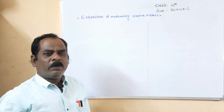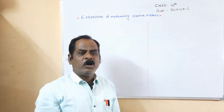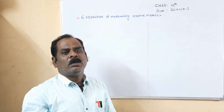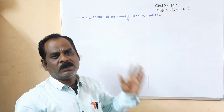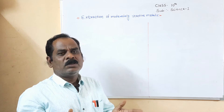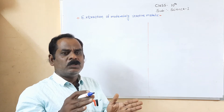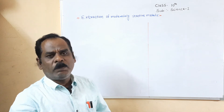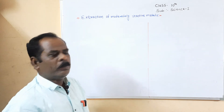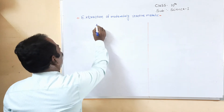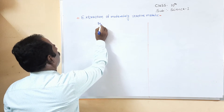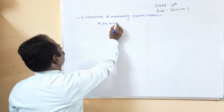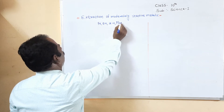What are moderately reactive metals? The metals which are present at the middle position in the reactivity series, and which do not react very fast or very slowly, are called moderately reactive metals. For example, iron, tin, zinc, lead, etc.